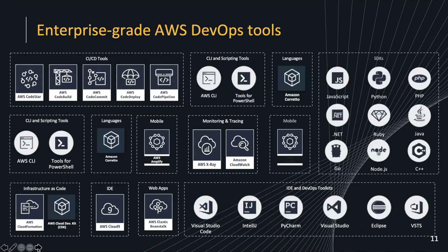What are the various enterprise-grade AWS DevOps tools? There is a spectrum of CI/CD tools available. You can use AWS CodeStar, which is a software-as-a-service model for all components. There's AWS CodeBuild, CodeCommit, CodeDeploy, and CodePipeline. Various CLI and scripting tools — AWS CLI or tools for PowerShell. Various languages and SDKs are supported, along with mobile development mechanisms. You have access to monitoring and tracing through AWS X-Ray and Amazon CloudWatch, infrastructure as code through CloudFormation and AWS Cloud Development Kit CDK, as well as IDEs and DevOps toolkits.